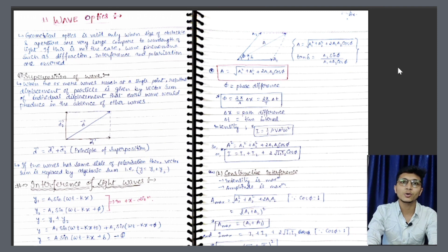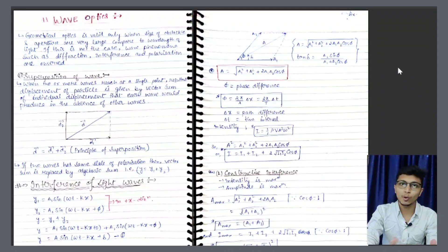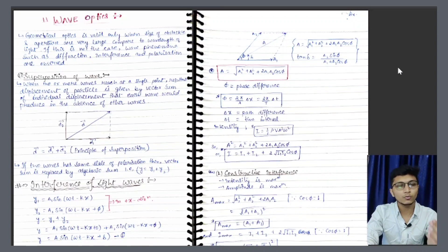So, let us start with wave optics. Aur jaise aap logo ko pata hai, ki light ka dho nature hota hai — ek aapka wave nature, aur ek particle nature. Particle nature hum padhte hain modern physics mein, wahan pe photoelectric effect naam ke topic aata hai, aur wahan pe hum log particle nature padhte hain.